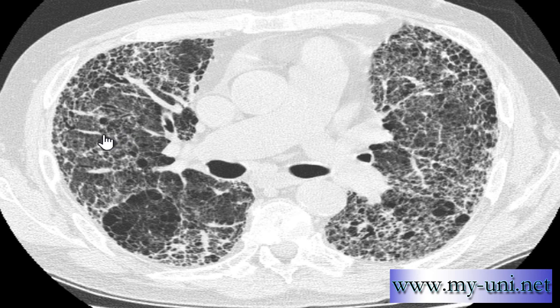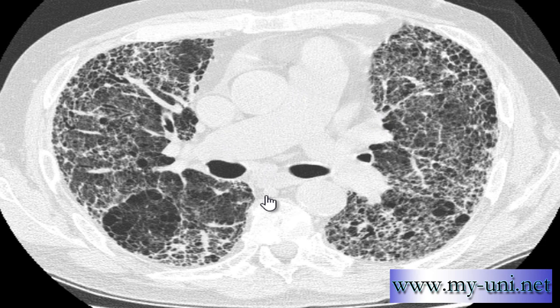Bronchiectasis is defined as an irregular dilatation of bronchi, which is clearly visible in at least two different places in the right lung — here and here. Also note the dilatation of the main and right pulmonary artery, suggesting this patient also has pulmonary arterial hypertension.